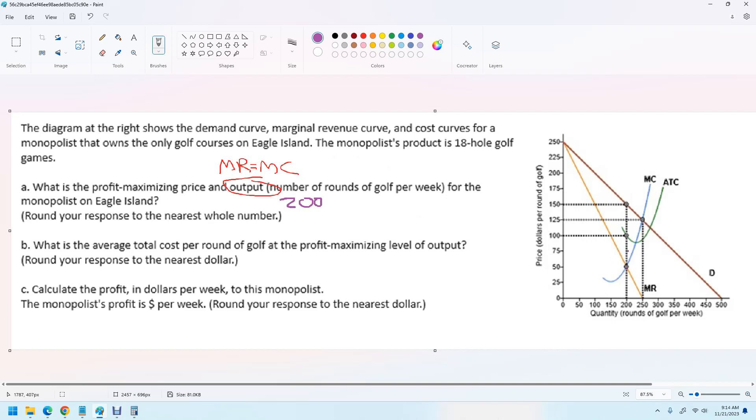We're going to produce 200 rounds of golf. It's a service, I guess. Follow this up to here. It's going to be $150. Fancy course here. So $150.